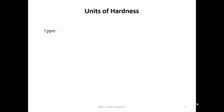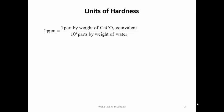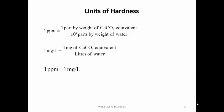Next are the units of hardness. The first unit is ppm: 1 ppm equals 1 part by weight of calcium carbonate equivalent per 10⁶ parts by weight of water. The second unit is milligram per liter: 1 mg of CaCO₃ equivalent per liter of water. The relation between ppm and mg/L is: 1 ppm = 1 mg/L.